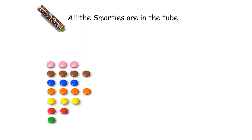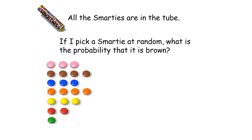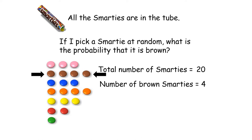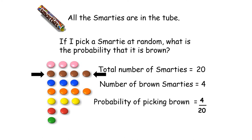All Smarties back in the tube. What is the probability that a randomly picked Smartie is brown? By asking the probability it's brown, it's the exact same question as what fraction of the Smarties are brown. There are 20 Smarties in total and 4 brown ones, so the probability of picking a brown Smartie is 4 out of 20. This simplifies - dividing numerator and denominator by 4 - to one fifth. We always give our fraction answers in their simplest form.